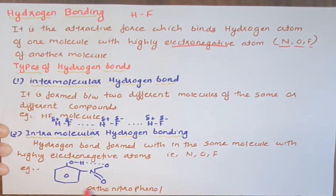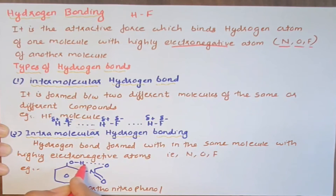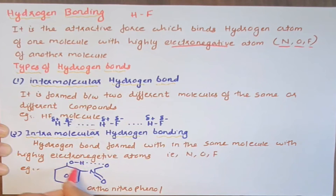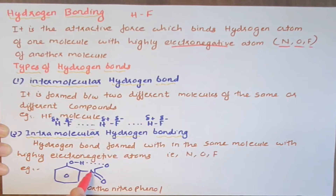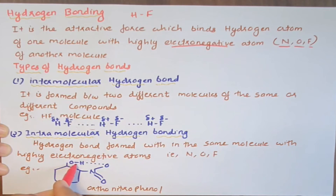An example of intramolecular hydrogen bonding is ortho-nitrophenol. In benzene, when there is an OH group it is called phenol. In ortho-nitrophenol, at the ortho-position there is a nitro-group with Oxygen, and the phenol group provides the OH.